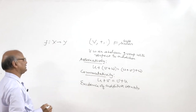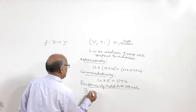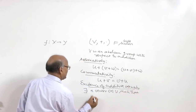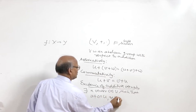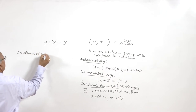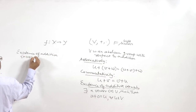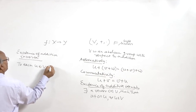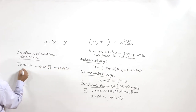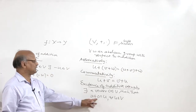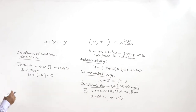The existence of an additive identity means there exists a vector 0 in V such that u plus 0 equals u for all u in V. Then we have the existence of an additive inverse: for each u in V there must exist a vector -u in V such that u plus (-u) equals the zero vector — the additive identity in V. If V has all these properties, V is said to be an abelian group with respect to addition.